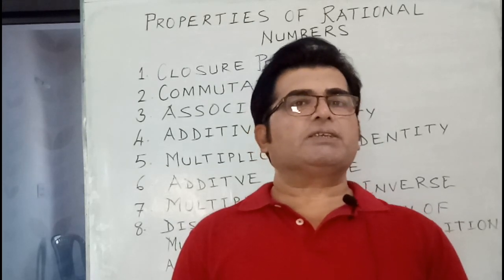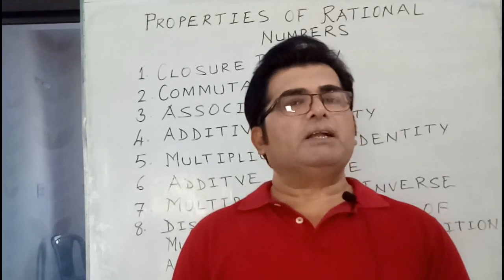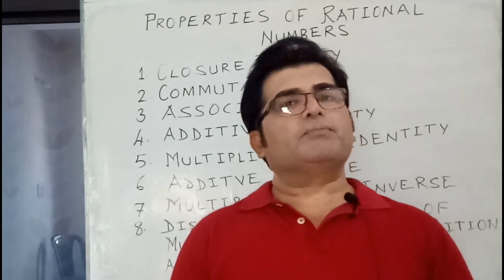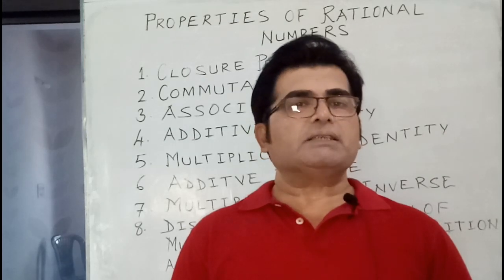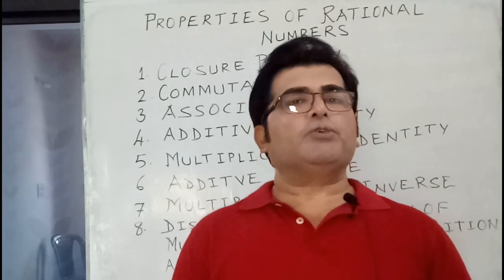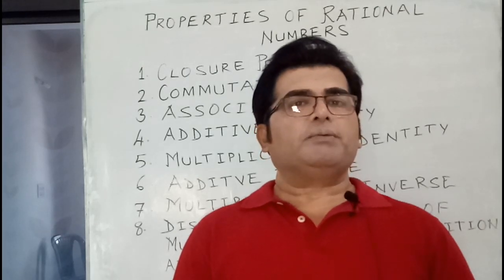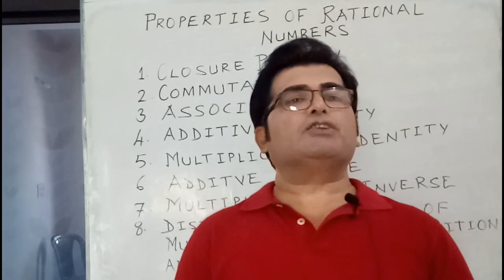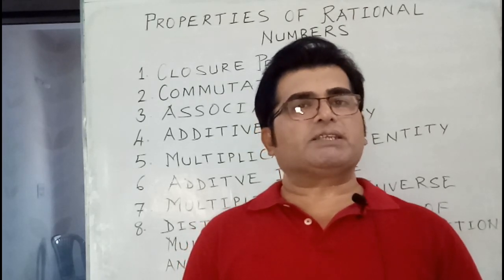In multiplication, commutative property is true. If you change the order of the rational numbers, their product will remain the same. But in division, commutative property is not true. If you change the order of the rational numbers in division, then the answers will not be the same.